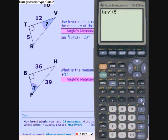Opposite 5 divided by 12. There you go, 22.6 degrees. That's how large that question mark is there.